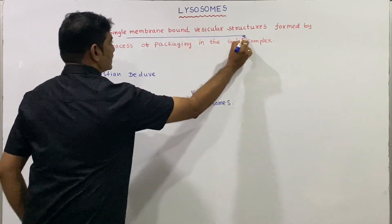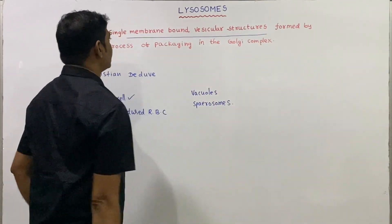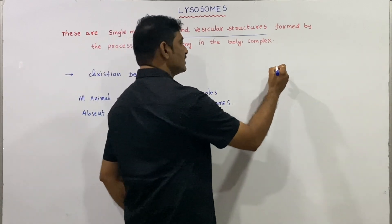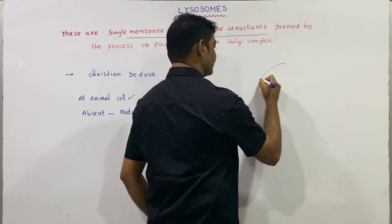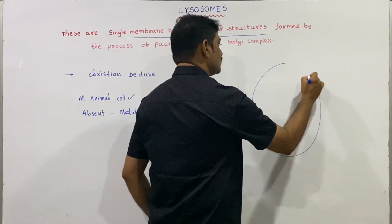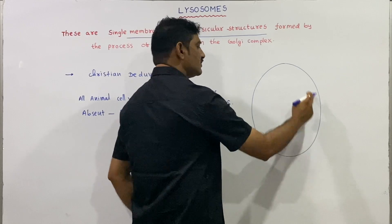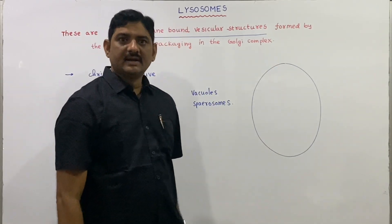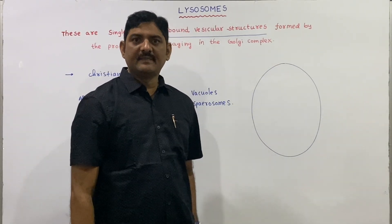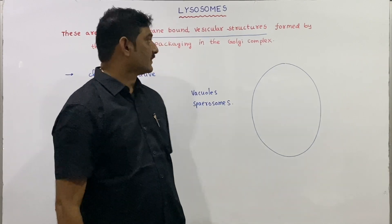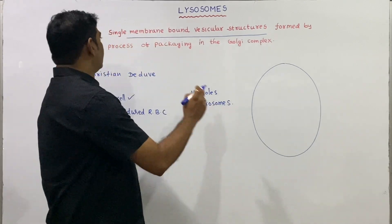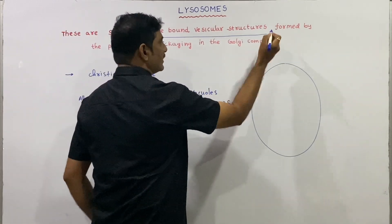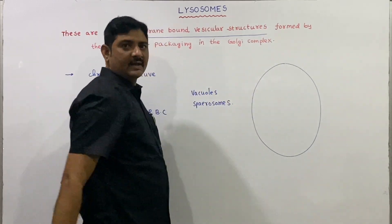Lysosomes are single membrane-bound vesicular structures. It is a true membrane made up of bilayered lipids and proteins. They are formed by the process of packaging in the Golgi complex.